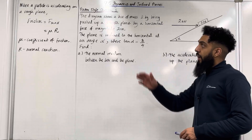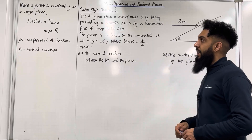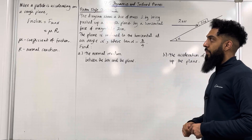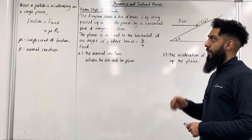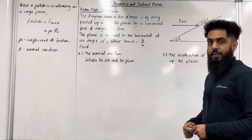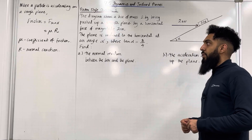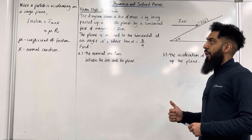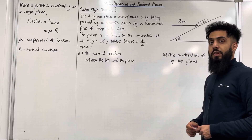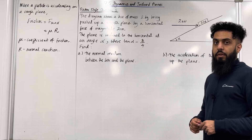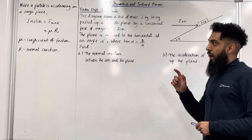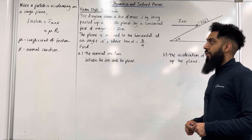When a particle is accelerating on a rough plane, friction is given by the maximum friction f max. f max is equal to mu times R, where mu is the coefficient of friction and R is the normal reaction.